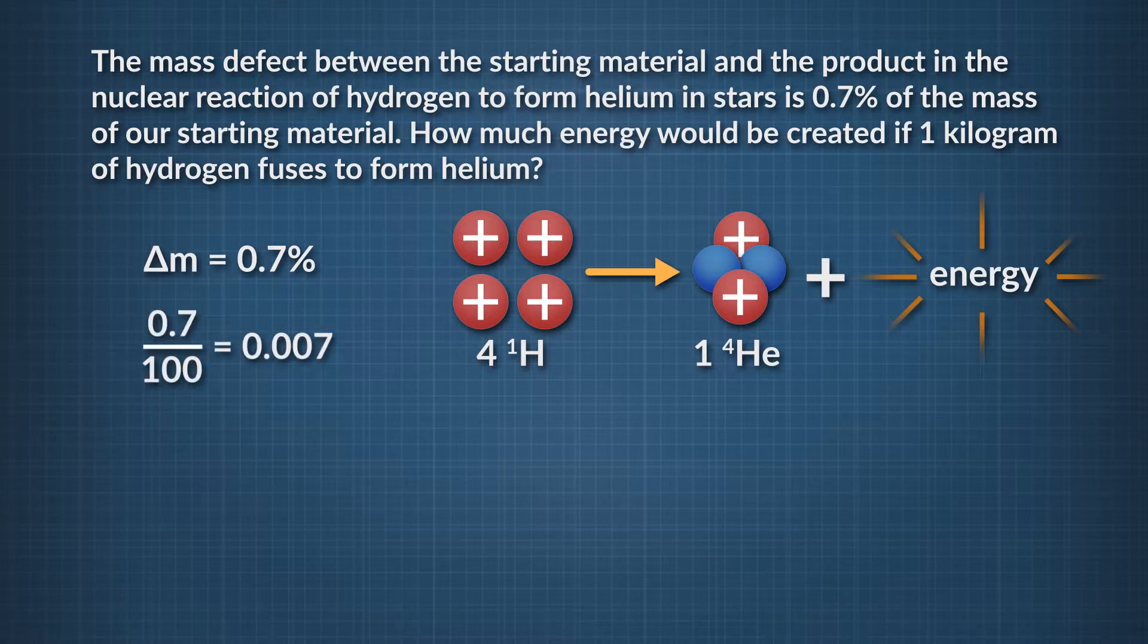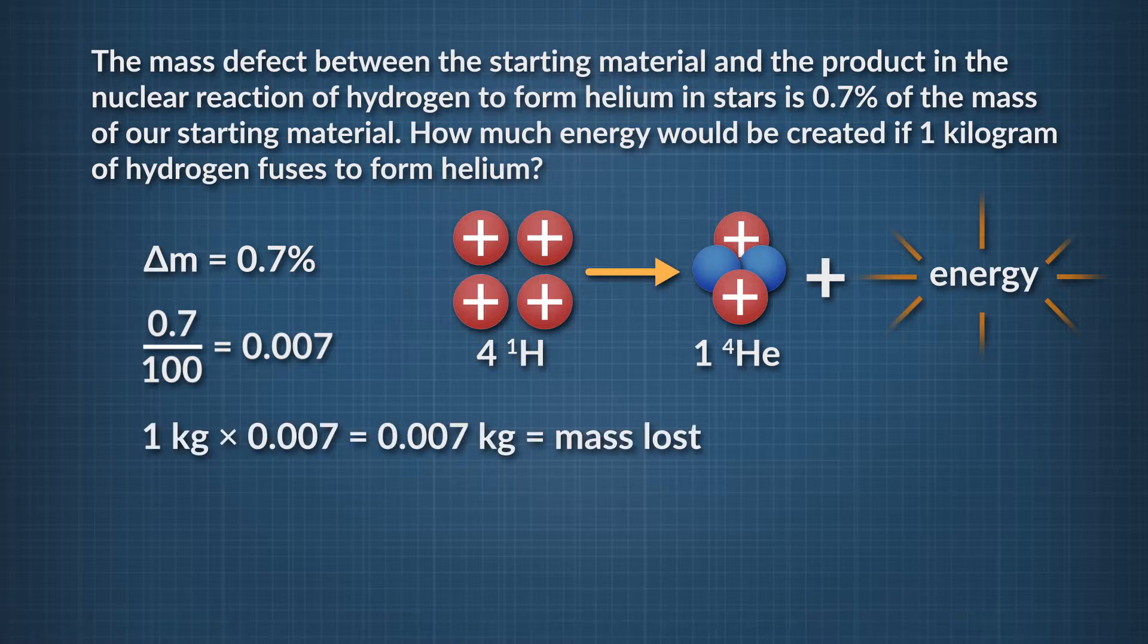Next, multiply this number by our starting mass, which is one kilogram. This gives you how much mass is lost in the process as energy, which is 0.007 kilograms. To get the energy created in the process, we use Einstein's equation to determine the energy equivalent for this amount of mass.